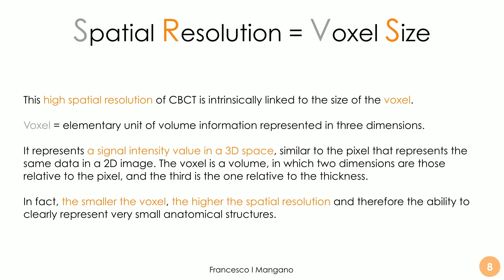So what is this spatial resolution? Basically, it's the voxel size. The higher spatial resolution of CBCT is linked to the size of the voxel. The voxel is the elementary unit of volume information represented in 3D; it represents a signal intensity value in a 3D space. It is similar to the pixel for 2D, but here we are in 3D. The voxel is a volume in which two dimensions are relative to the pixel, with a third dimension being the thickness. The smaller the voxel, the higher the spatial resolution and the ability to discriminate between small anatomical structures.